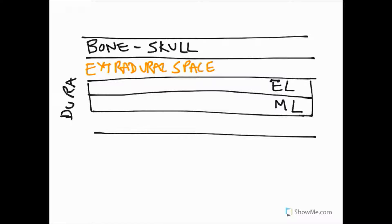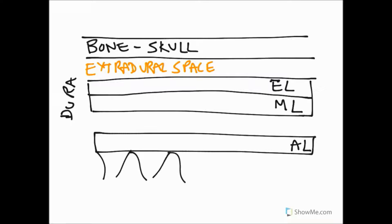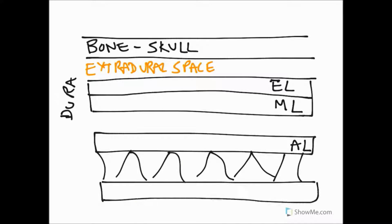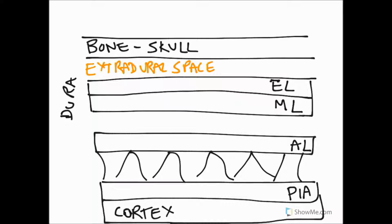The next layer down is the arachnoid layer (AL). The arachnoid layer has these trabeculations — very characteristic spider-like projections — that come down and join another layer of the meninges called the pia. It's the pia which is adhered to the brain surface, in particular the cerebral cortex, and it follows all of the individual grooves, going deep into each sulcus and following each gyrus.